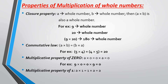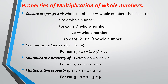Multiplicative property of 1: for any whole number A, when we multiply it with 1, we get that whole number itself as the answer. No matter what the number is, when you multiply it with 1, the answer is that given number. Here, with whole number A as 9, when I multiply 9 with 1, my answer is going to be 9 only.